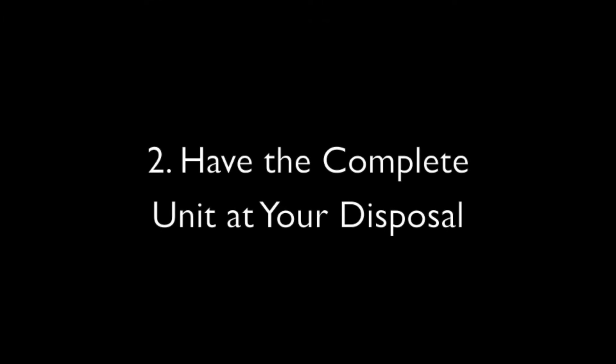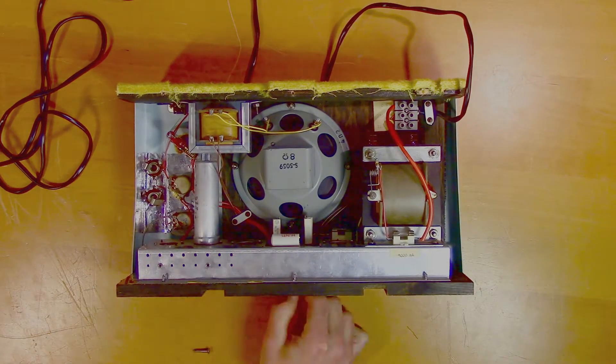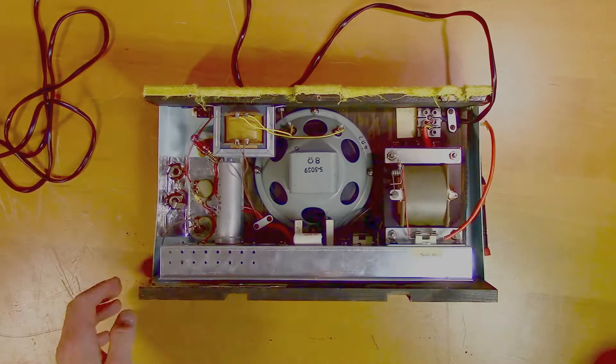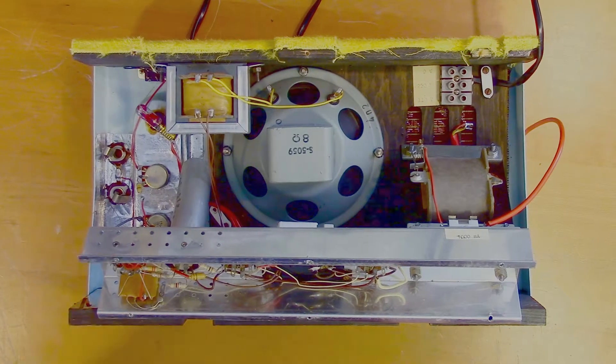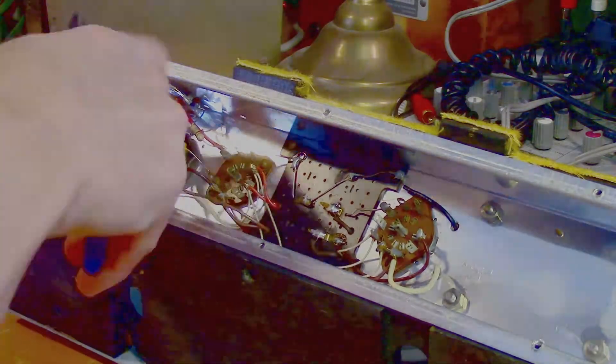Number two: have the complete unit at your disposal. Since you don't know what is wrong with the unit until you troubleshoot it, you should make sure to have the entire unit available. Even if this seems obvious to you if you're experienced in electronics, it will most likely not be obvious to someone you are helping out with a repair.